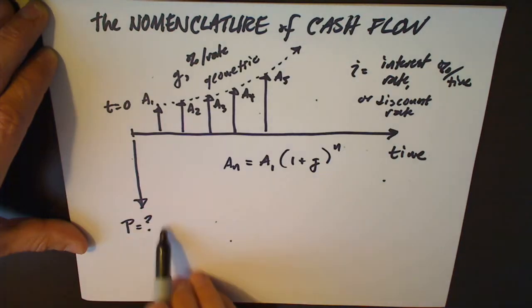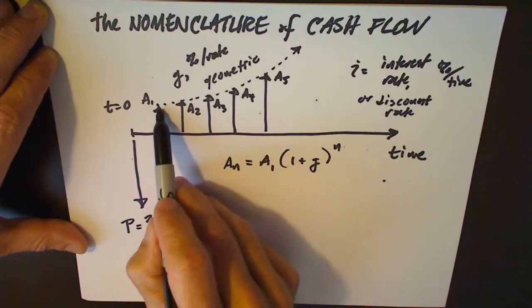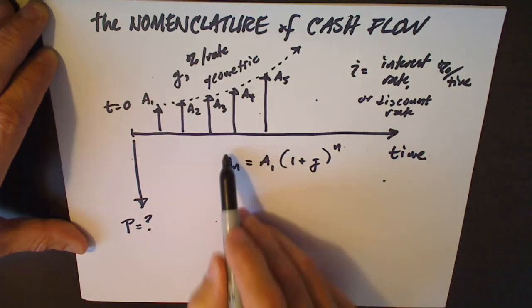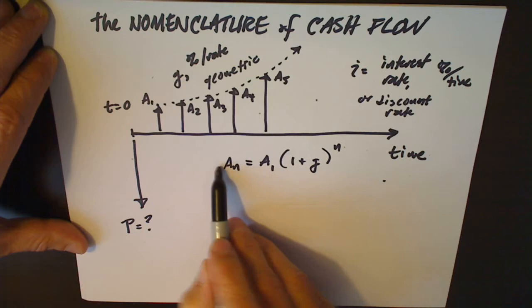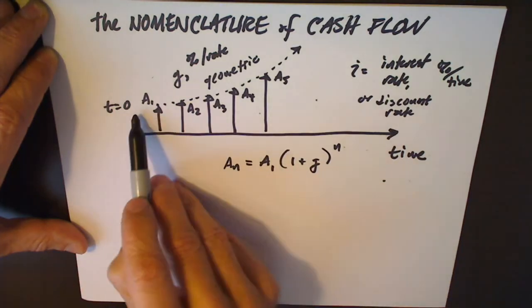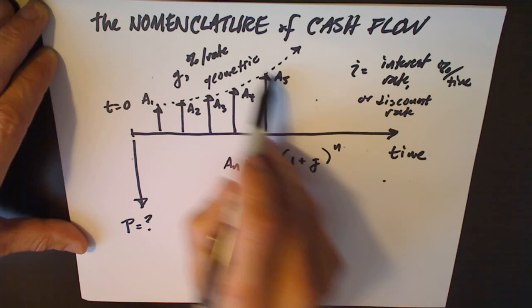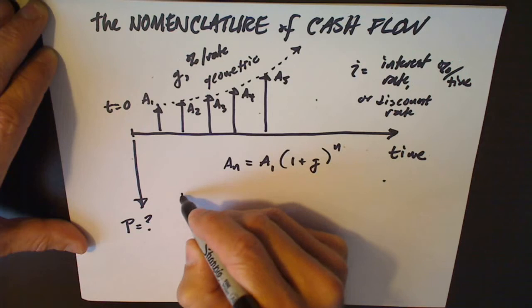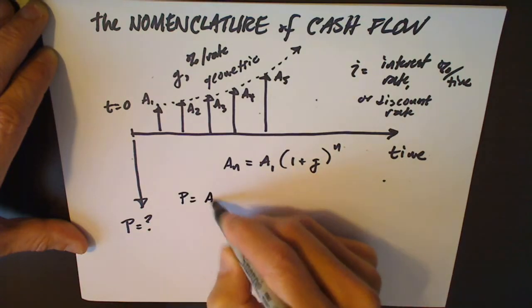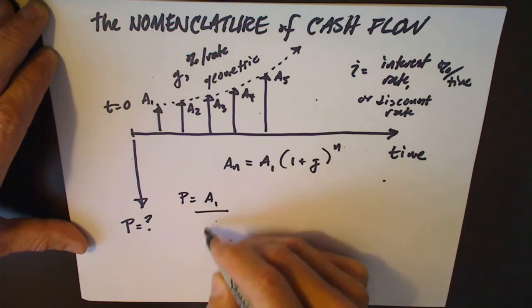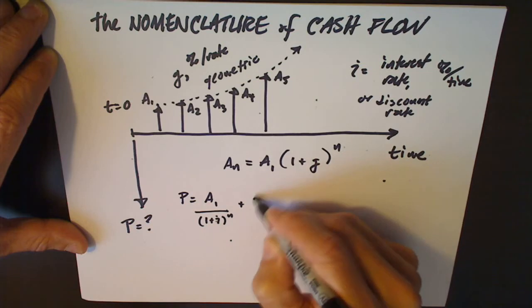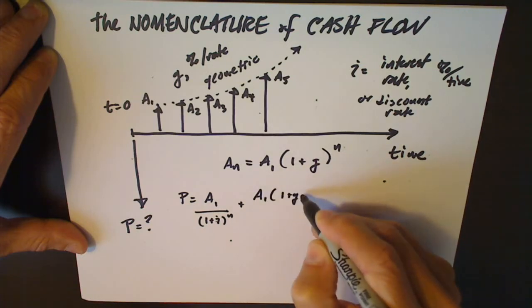One way to do it would be by hand: treat each one of these as an F, calculating F1, F2, F3, F4, just like we do with A to the n, and in separate terms of a calculation, discount them all to present value. What would that look like? It would look like P equals A1 over 1 plus the discount rate to the n, plus A1 times 1 plus g...